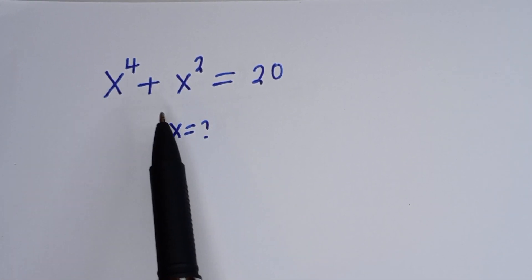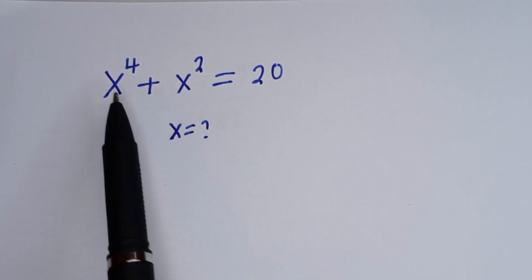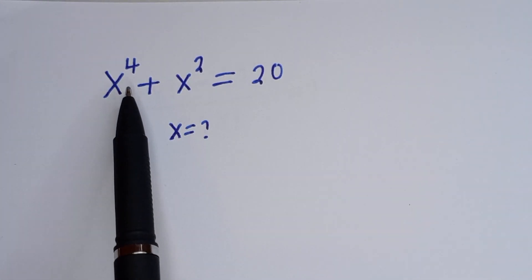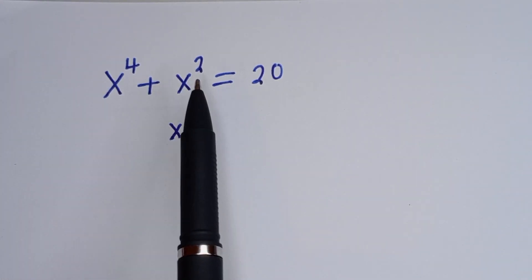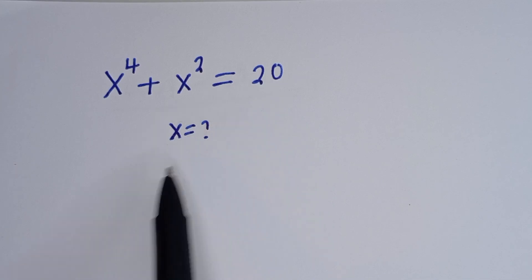Hello. How to solve for s in this equation: s to the power of 4 plus s squared is equal to 20.